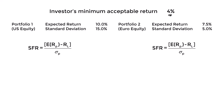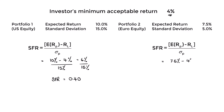For portfolio one, we get an excess return of 10% minus 4%, which is 6%, and divide that by the standard deviation of 15% to get a safety first ratio of 0.4. For portfolio two, we have 7.5% minus 4%, an excess return of 3.5%, divided by 5%, resulting in a safety first ratio of 0.7 — higher than that for portfolio one.